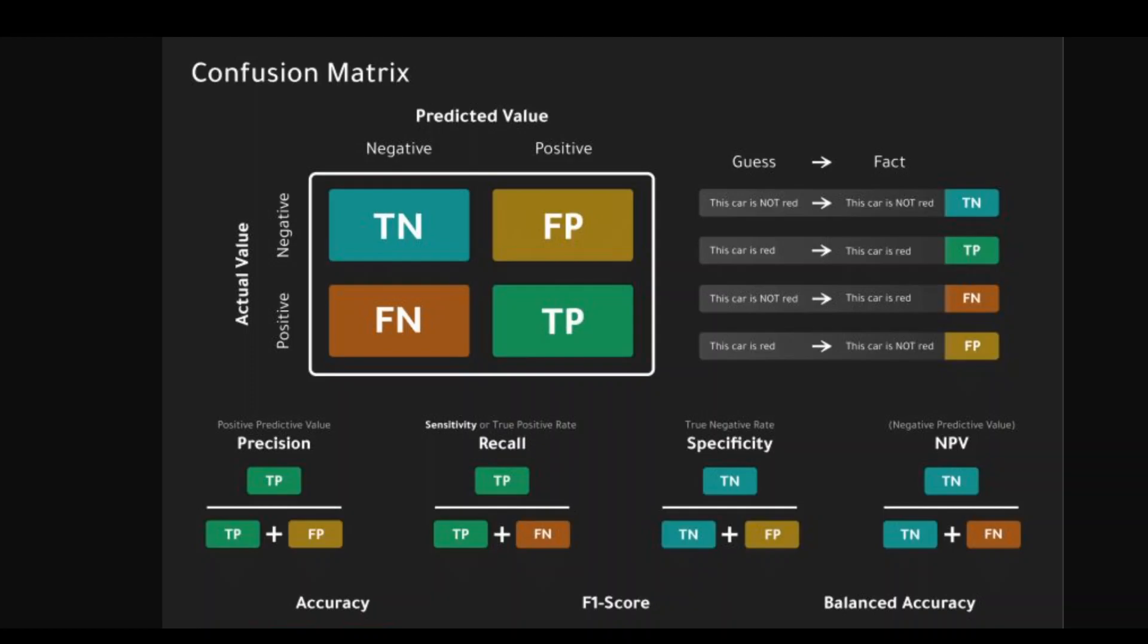On the other hand, in a spam email classification problem, recall may be more important than precision. This is because false negatives, not identifying spam emails, can be very costly, while false positives, identifying legitimate emails as spam, may be less important.